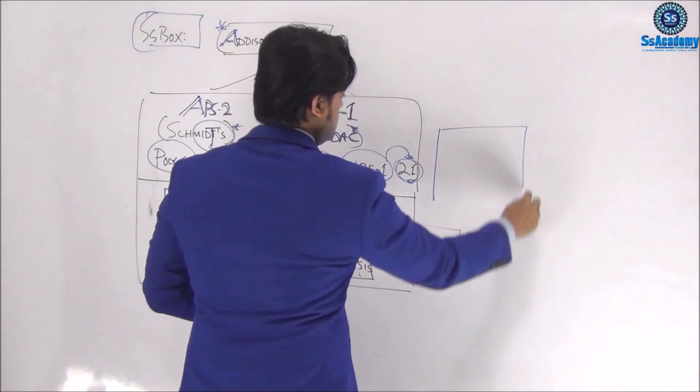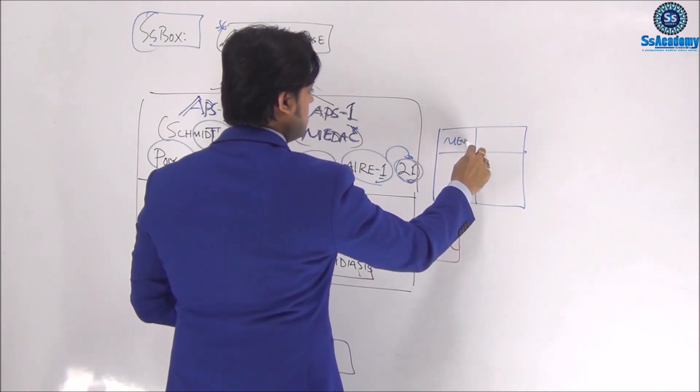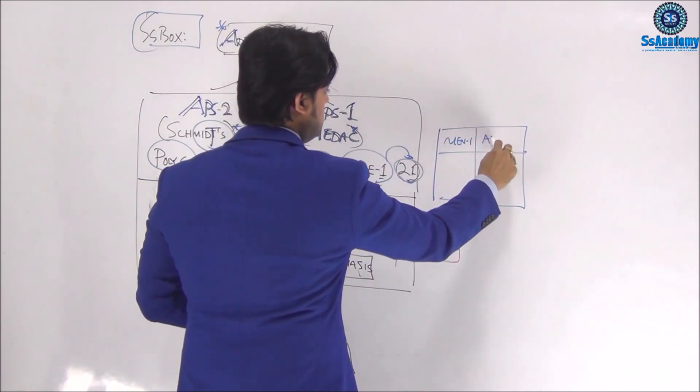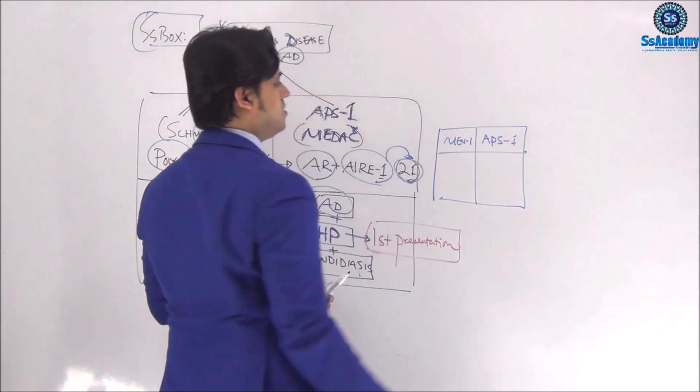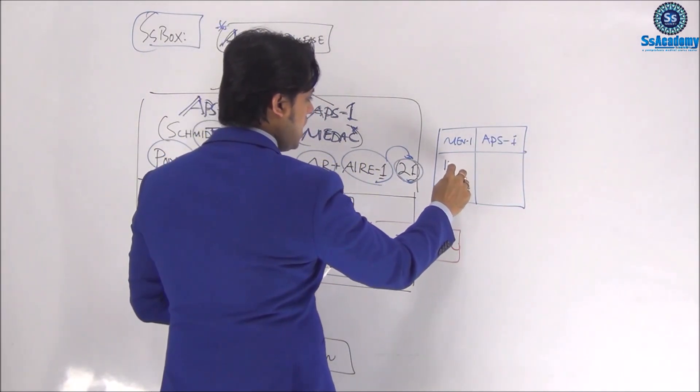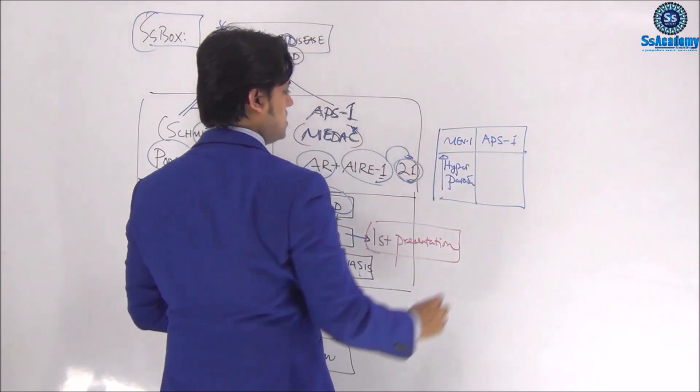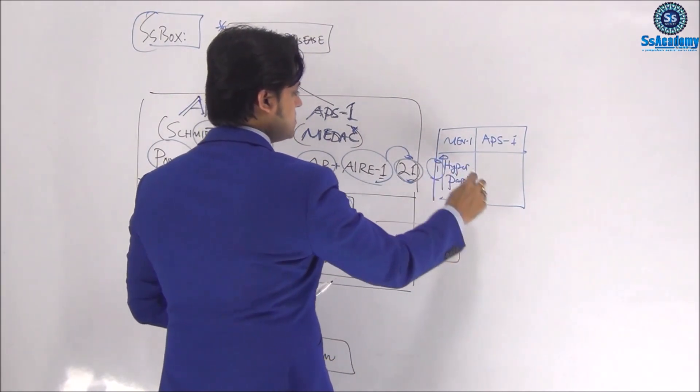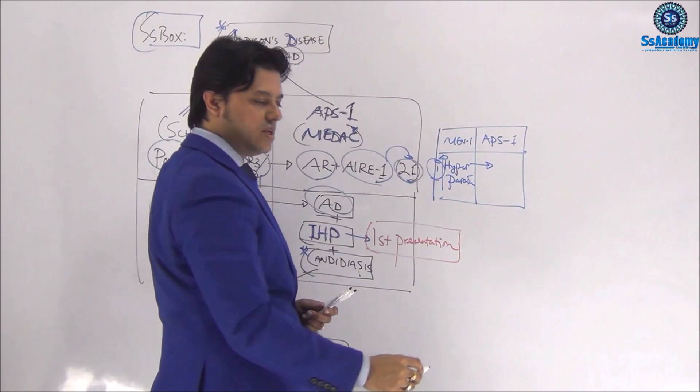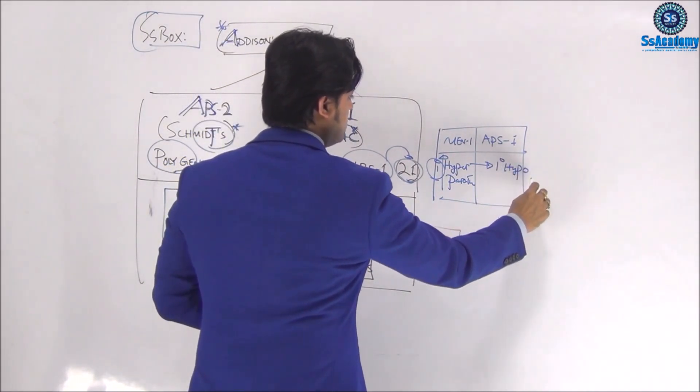A small box will be helpful here. We already studied MEN 1, remember? And this is APS type 1. MEN 1 has primary hyperparathyroidism. In contrast, APS type 1 is primary hypoparathyroidism.